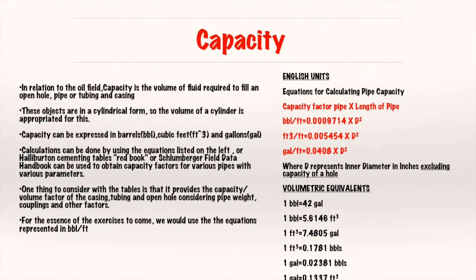In oil field terms, capacity is the volume of fluid required to fill an open hole, pipe, tubing, or casing. These objects are in a cylindrical form, so the volume of a cylinder is appropriate, meaning the equations are derived from the volume of a cylinder. It is mainly expressed in barrels, cubic feet, and gallons.